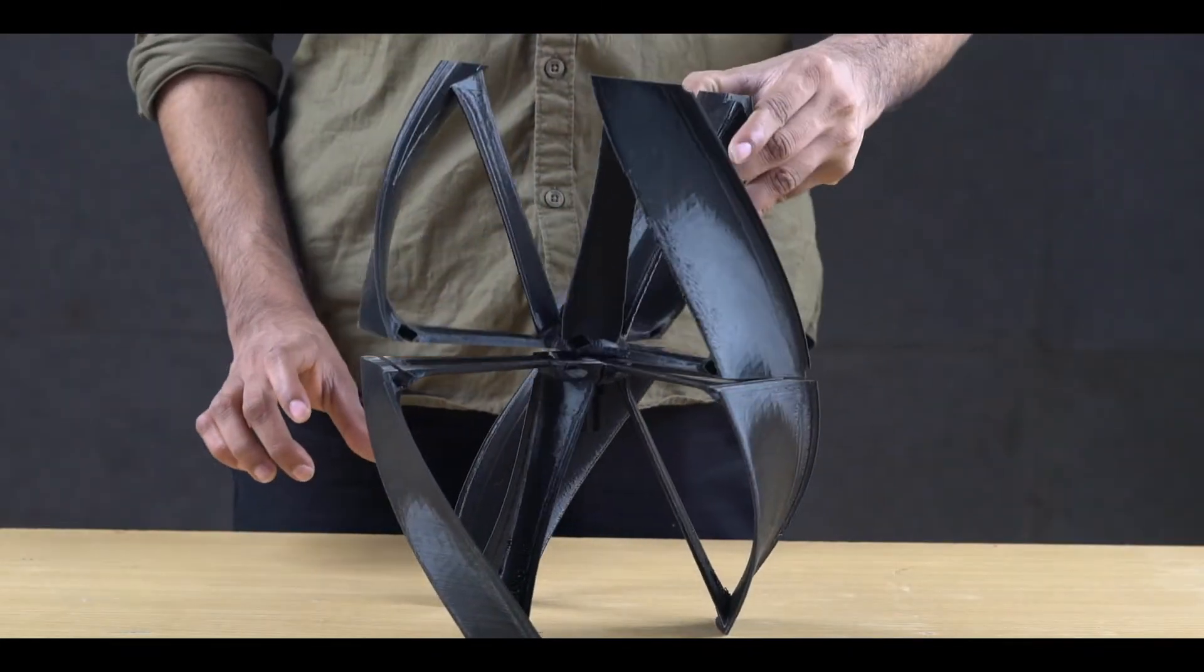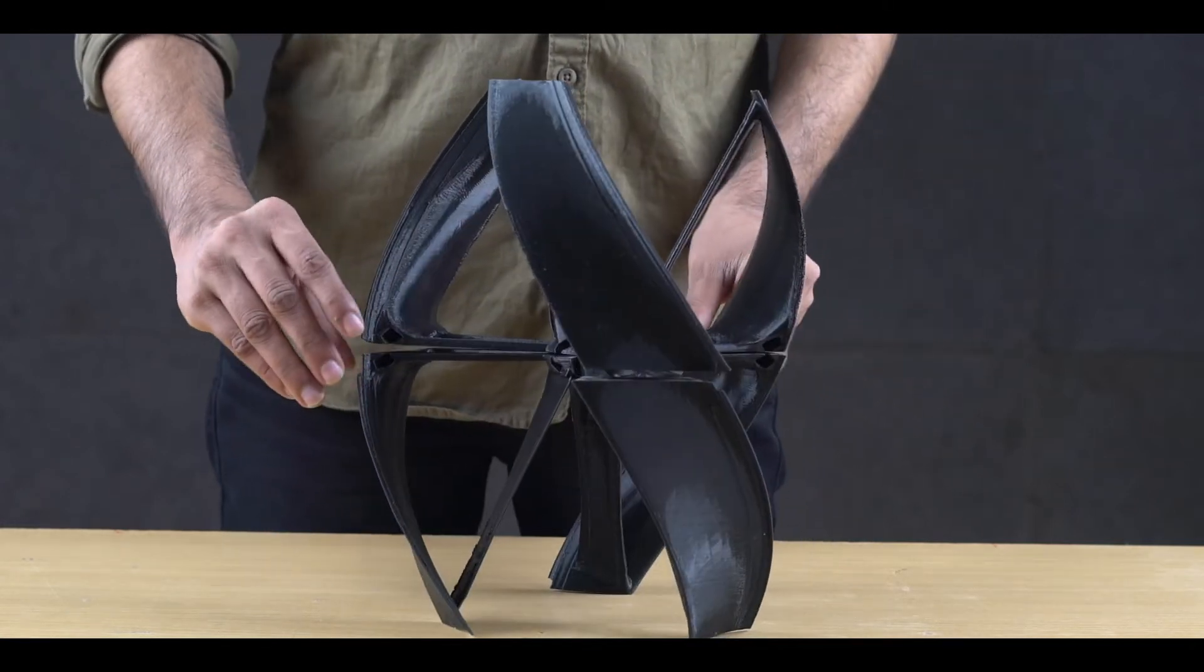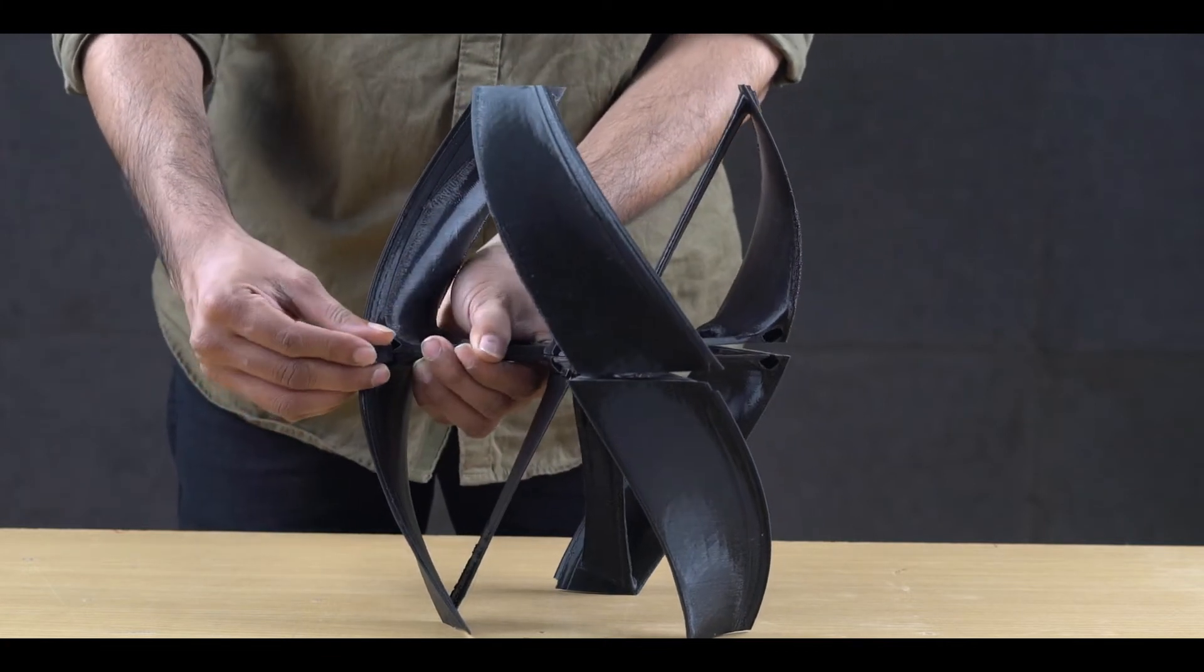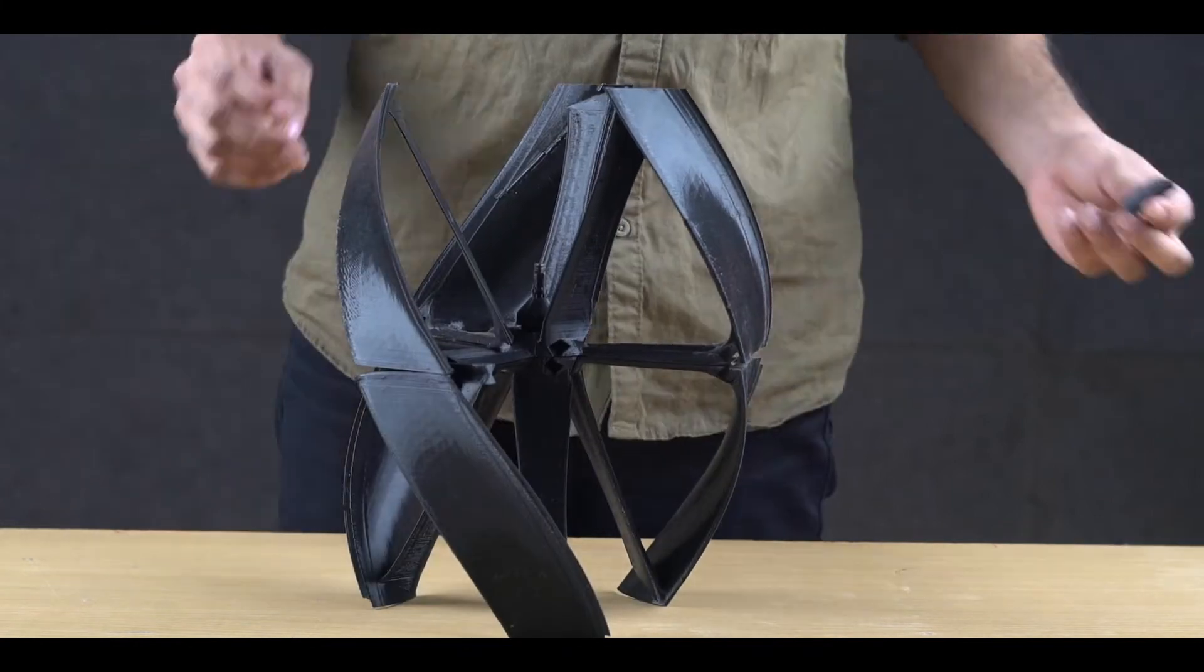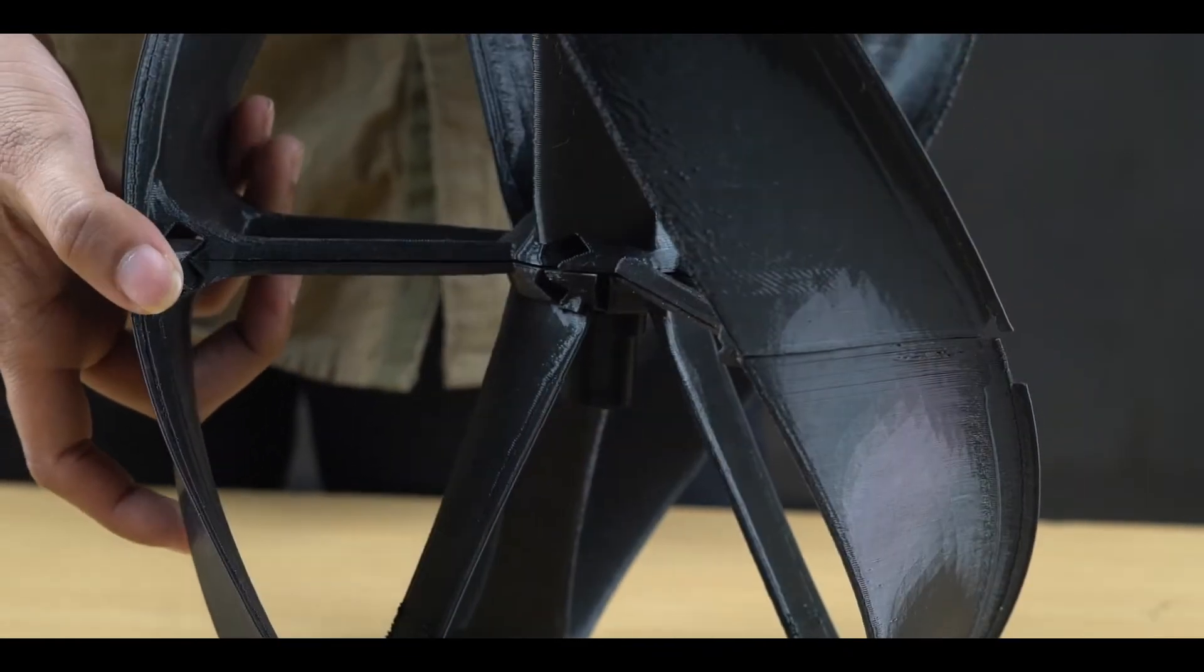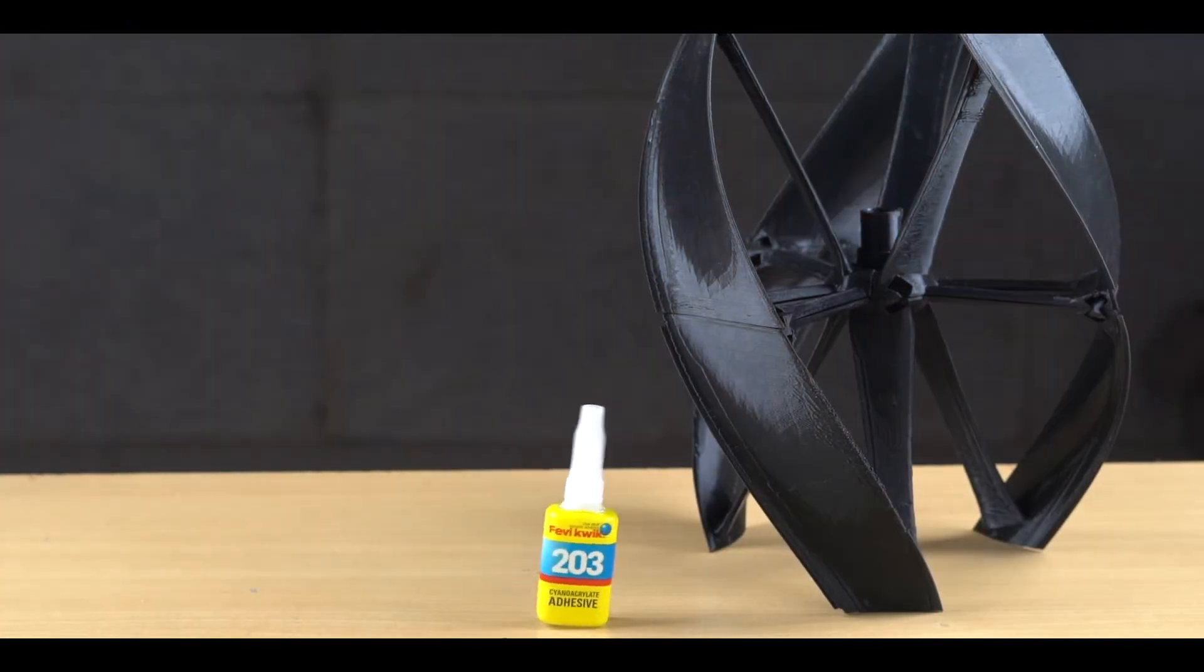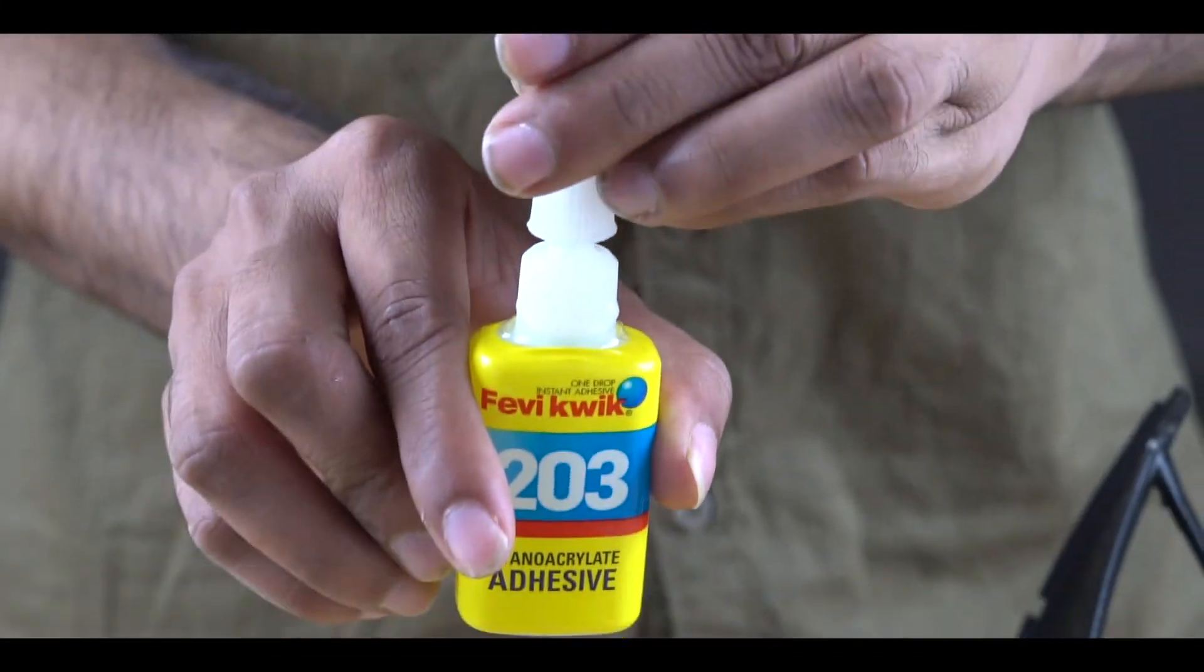Combine both the top and bottom wings using the short pins between them. Press the short pins to lock the wings. Use FeviQuick for the stronghold.